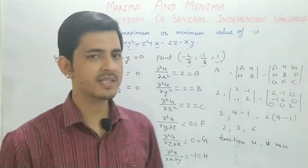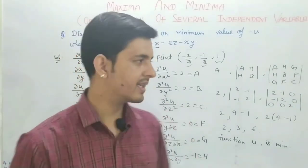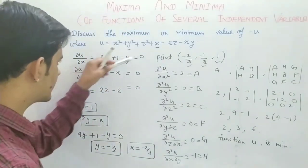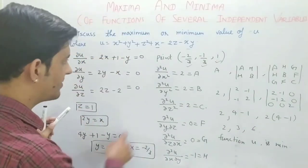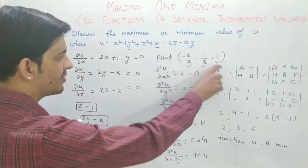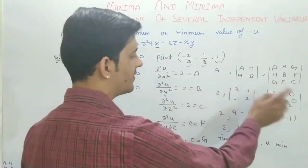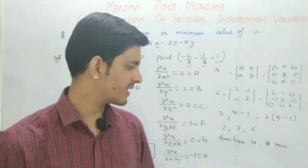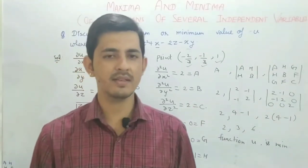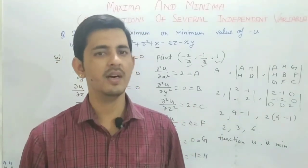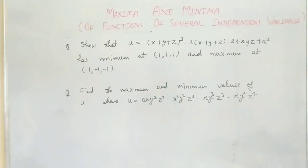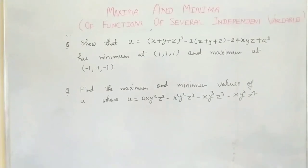So, in this way, you get the maximum or minimum value. Partially differentiate and set equal to 0 to get x, y, z values — the stationary point. Then find the capital A, B, C, F, G, H values and compute the three determinant values. If all three are positive, the function is minimum; if the signs change alternately, the function is maximum. Now I will give you two numericals.